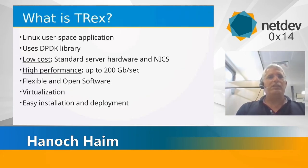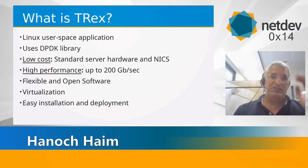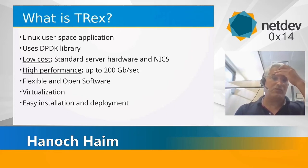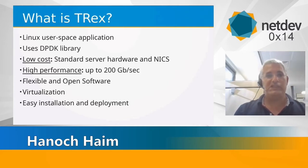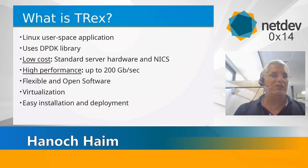T-Rex is a Linux user-space application. It uses the DPDK library, and by that we can reach very high rates because it has burst of packets in receive and transmit. It uses standard off-the-shelf hardware and NICs. We can get very high performance like 200 gigabits for realistic traffic, or 100 to 200 mega packets per second for stateless. It's flexible, open source, supports virtualization, and can work on Azure and AWS, with very easy installation.